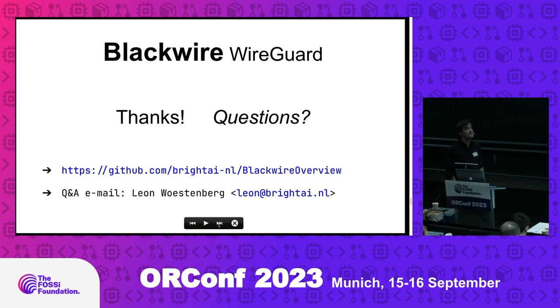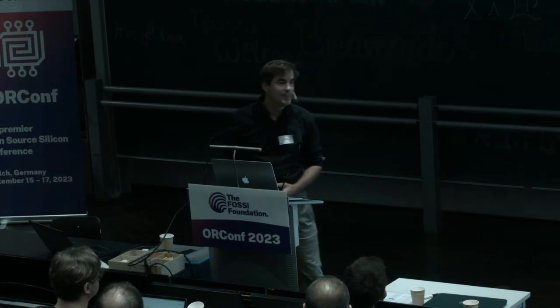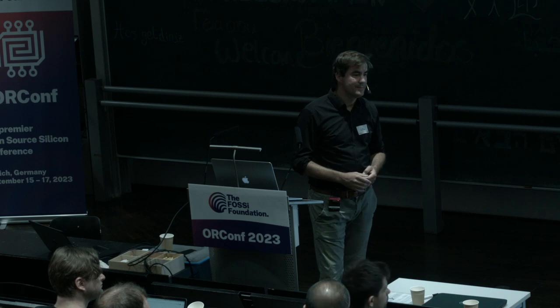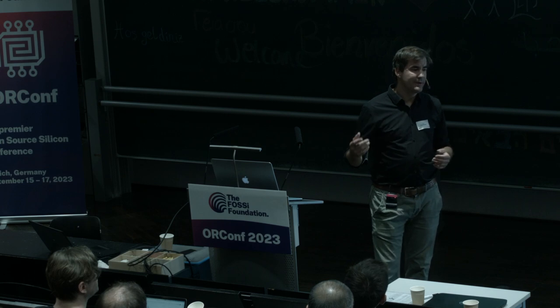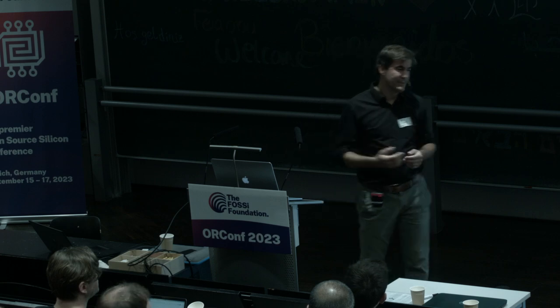We have time for a couple of questions. Question: is the handshaking process in TCP or can it also be done in UDP? WireGuard is UDP-based, so the outer packet is a UDP packet. The handshaking is also done in UDP — WireGuard runs UDP over public internet or IP networks. The inner traffic can be any protocol, any IP-based protocol. So the handshake is always UDP.